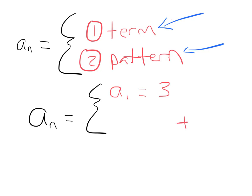Somewhere in the next part, there's going to have to be a plus four. What are we adding four to? We're going to add four to the term in front of the term we want to know. This is the way mathematicians have developed it: in sequence A, if you want to know term number K, then use the term that comes before it. If K is your favorite number, the number before it is K minus one — for example, before 5 is 4, before 12 is 11. So we write this as A subscript K minus one. This is how we write a recursive formula.